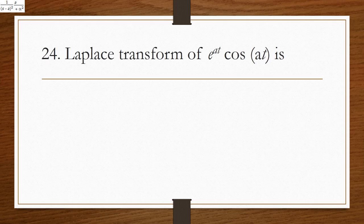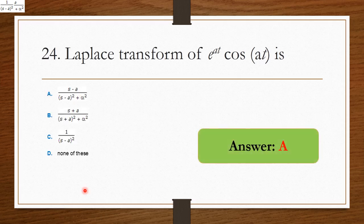The Laplace transform of e^(−at)·cos(αt) — the answer is (s − a) / [(s − a)² + α²].